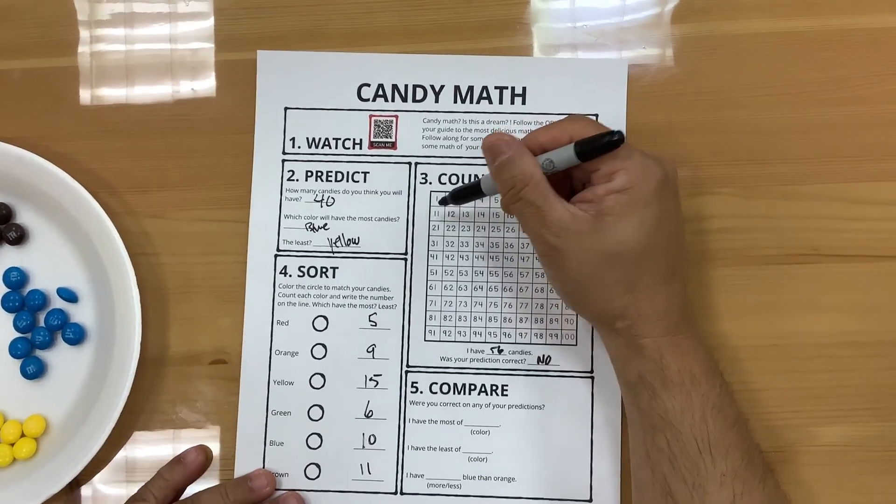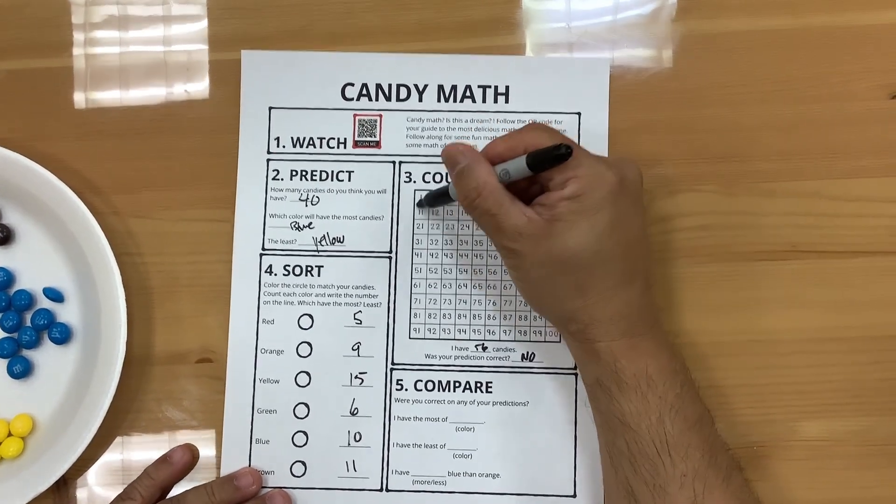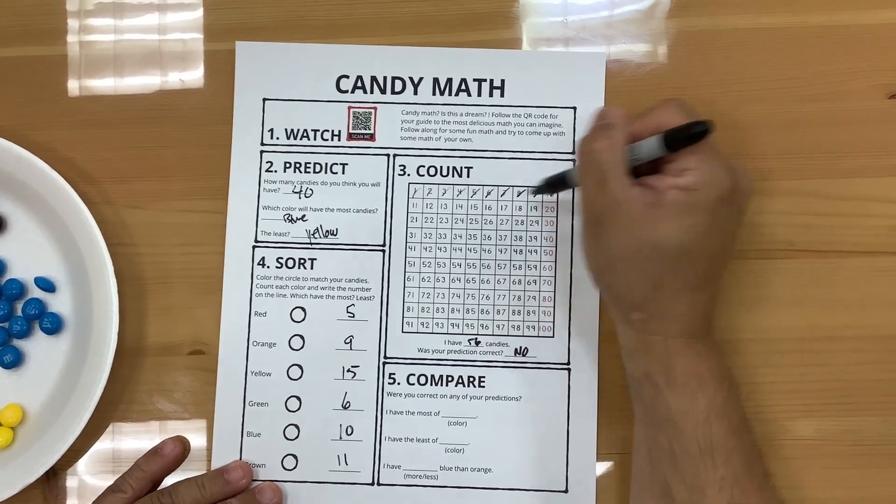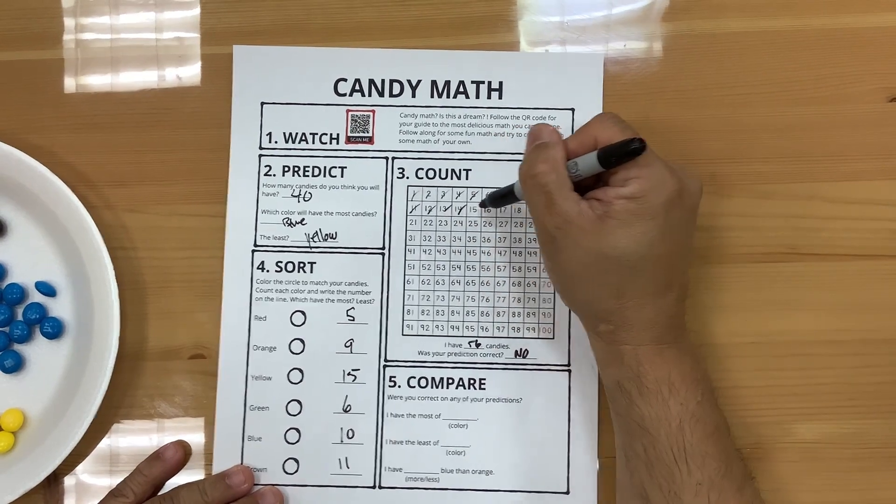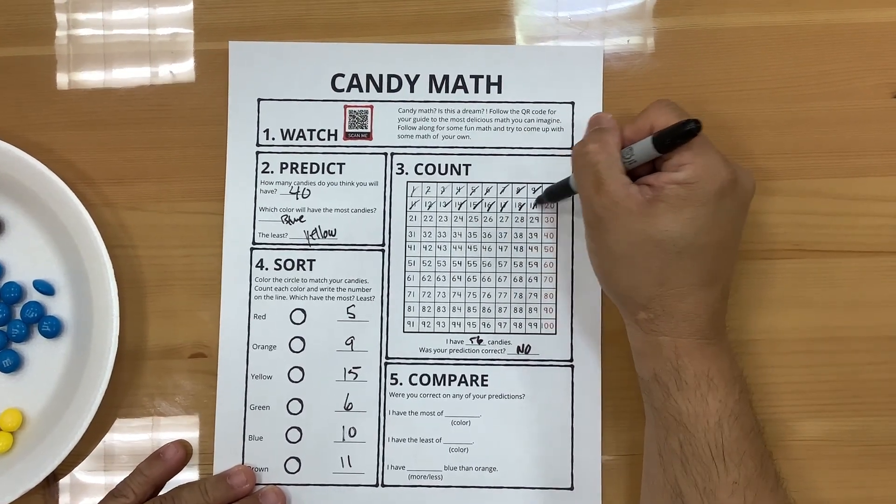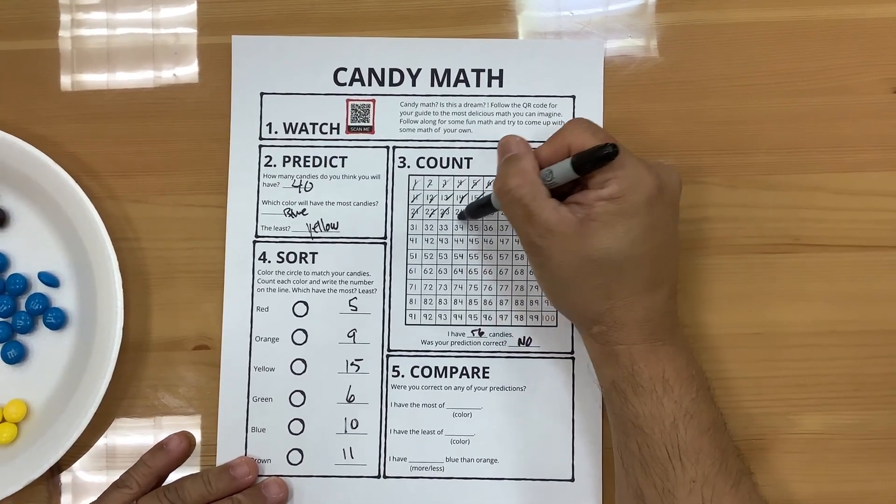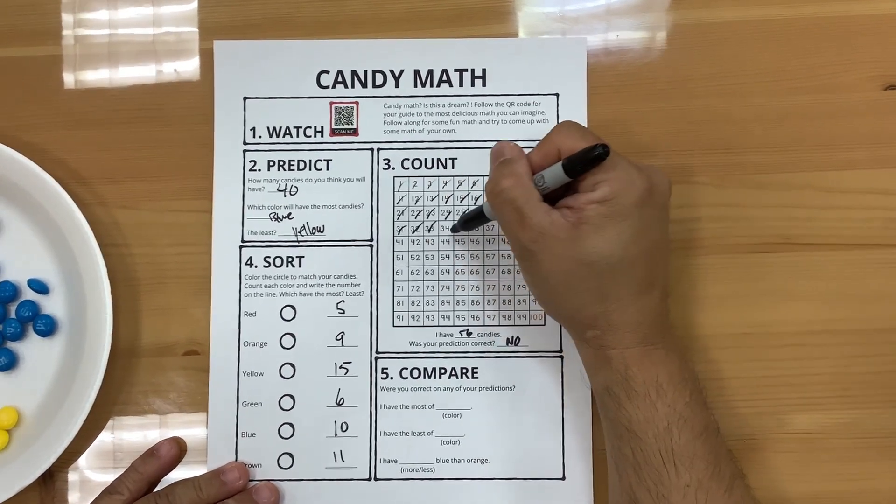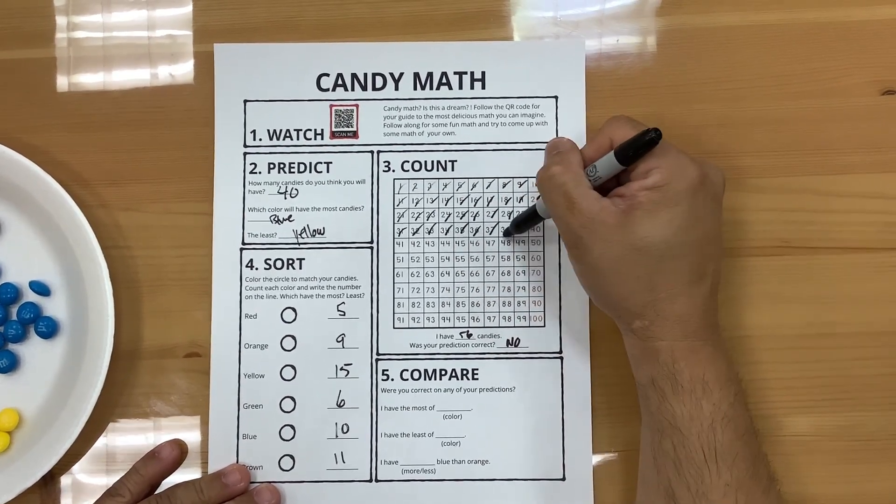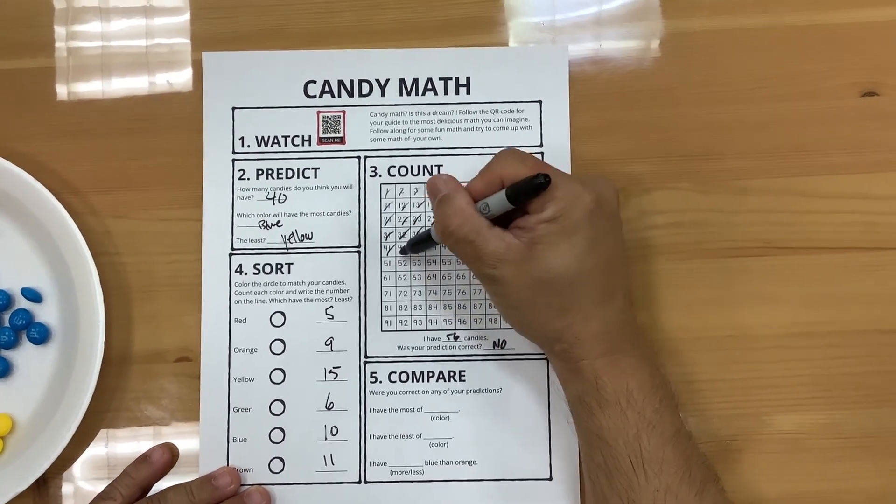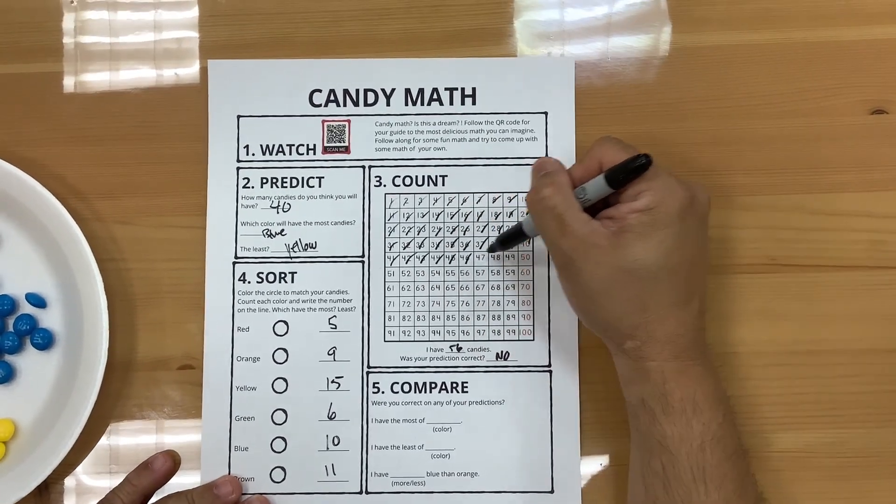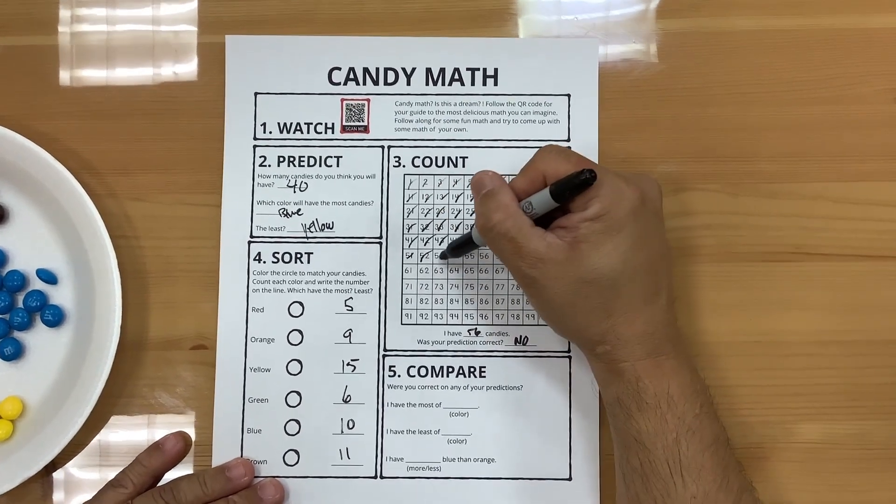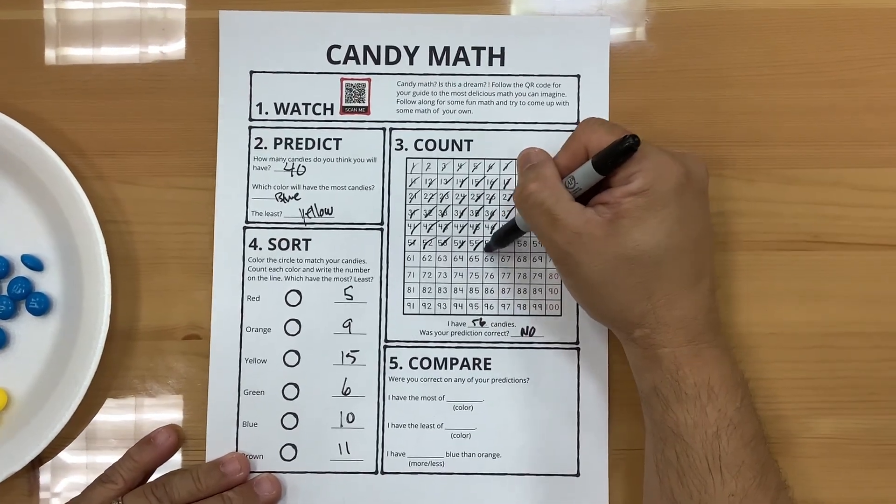So I'm going to count. I'll count all this. 1, 2, 3, 4, 5, 6, 7, 8, 9, 10, 11, 12, 13, 14, 15, 16, 17, 18, 19, 20, 21, 22, 23, 24, 25, 26, 27, 28, 29, 30, 31, 32, 33, 34, 35, 36, 37, 38, 39, 40, 41, 42, 43, 44, 45, 46, 47, 48, 49, 50, 51, 52, 53, 54, 55, 56.